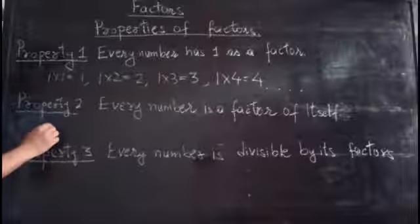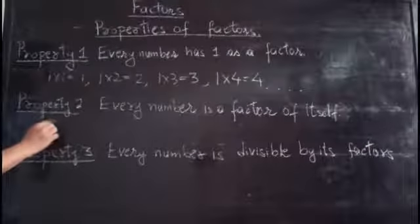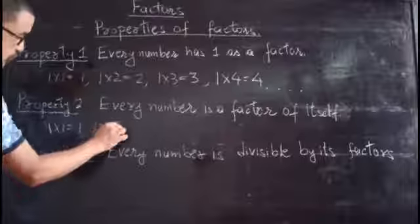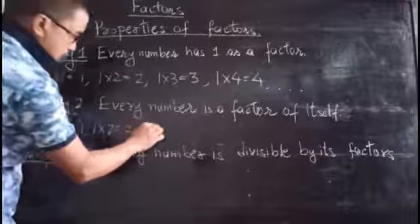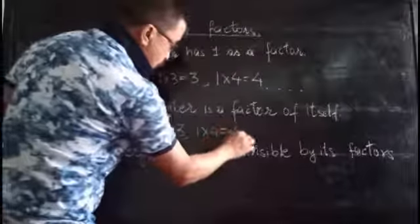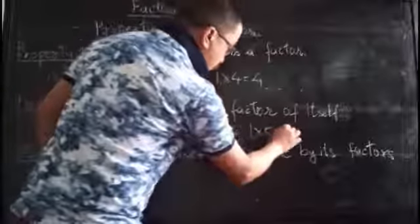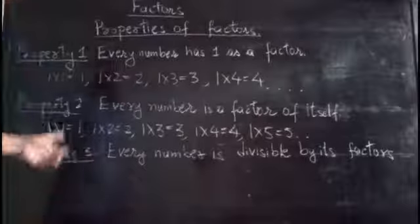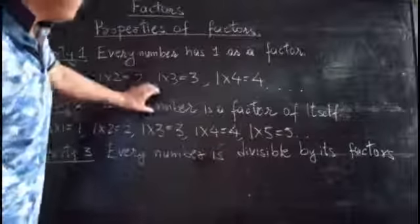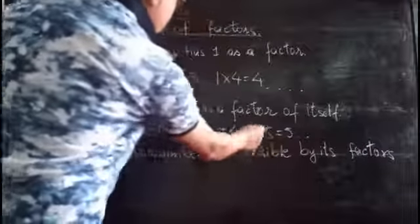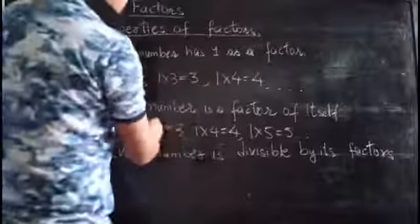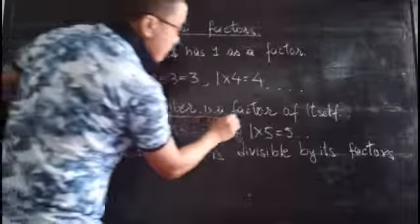Let's take the examples: one times one is one, one times two is two, one times three is three, one times four is four, one times five is five, and so on. Every number — one, two, three, four, five — is a factor of itself.